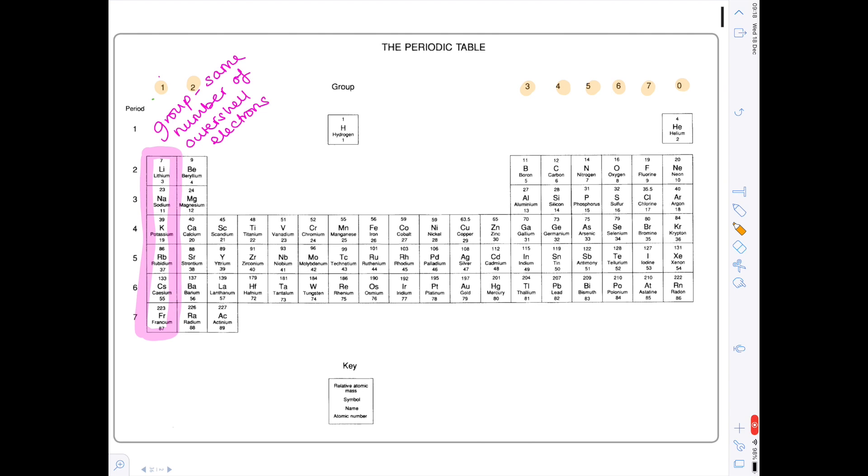But how about we take a horizontal row now? Let's take this one. Well a horizontal row is known as a period and again they correspond. So here's period 1, 2, 3, 4, 5, 6, 7. What is true about elements in the same period?